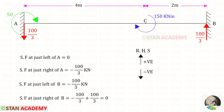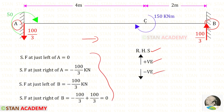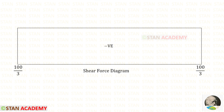Now let us find the shear force values. From point A towards point B, we use the right-hand side rule: upwards is positive and downwards is negative. Using this rule we can find the shear force values. Here you can see the shear force diagram.